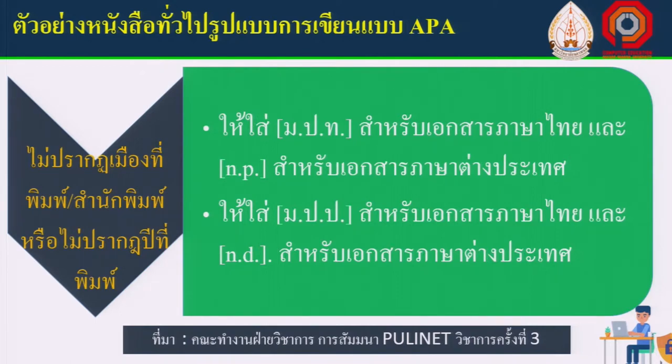เราก็สามารถใส่ชื่อแผนการศึกษาแห่งชาติ ฉบับที่เท่านี้ แล้วก็ปีพอสอ กรุงเทพ เซมิโคลอน แล้วก็หน่วยงาน อันนี้คือตัวอย่างของกรณีที่ไม่ปรากฏนามผู้แต่ง สำหรับเอกสารภาษาไทย และถ้าเป็นต่างประเทศวงเล็บปิด ใช้ตัวย่อ N.P.